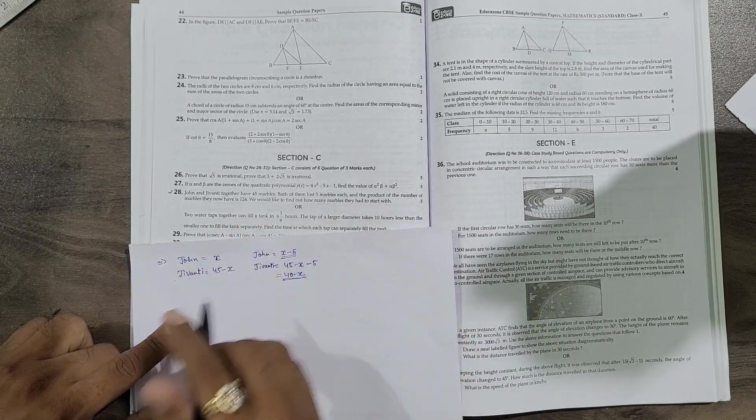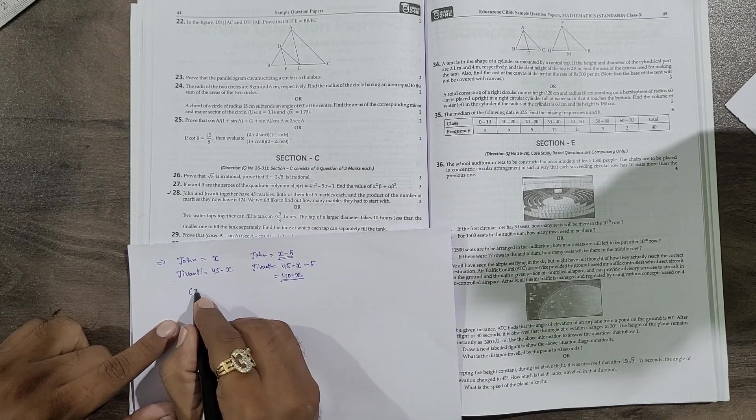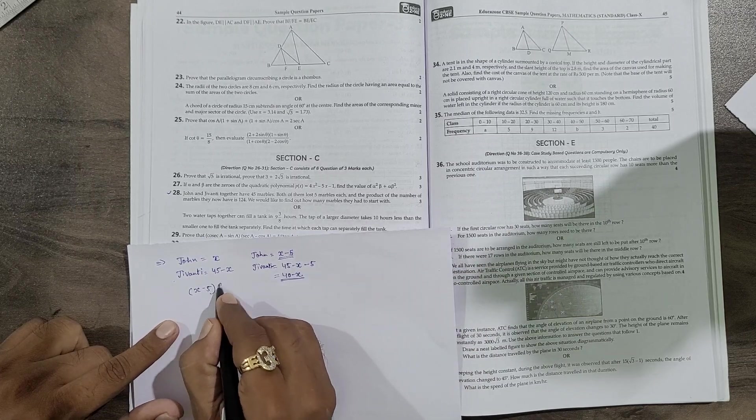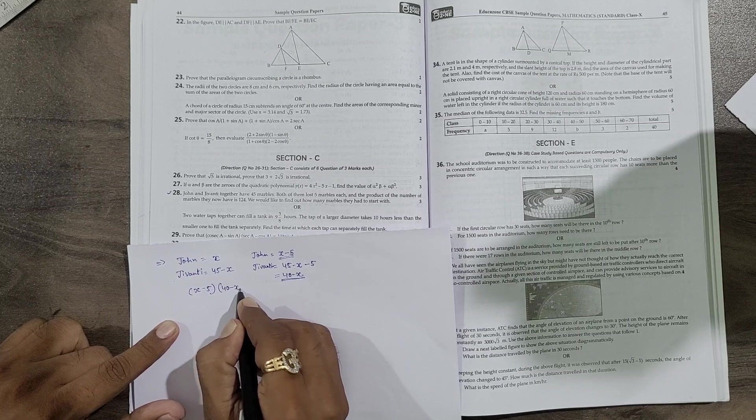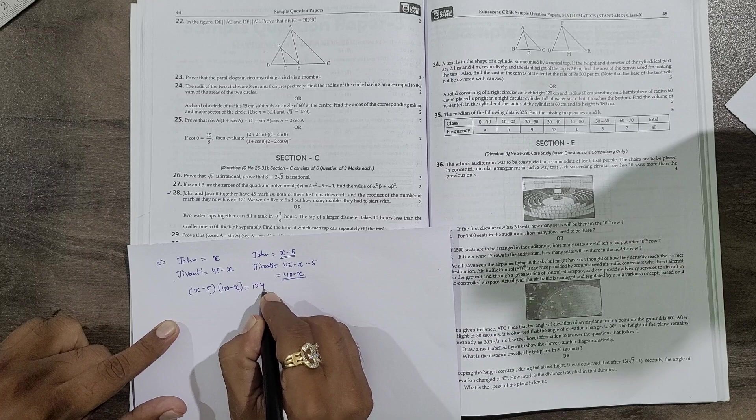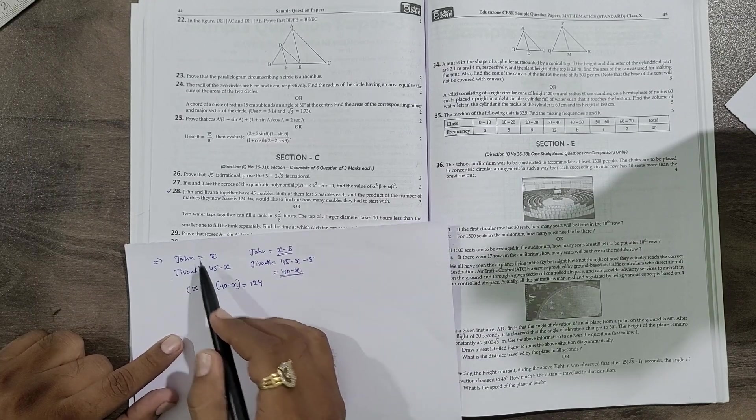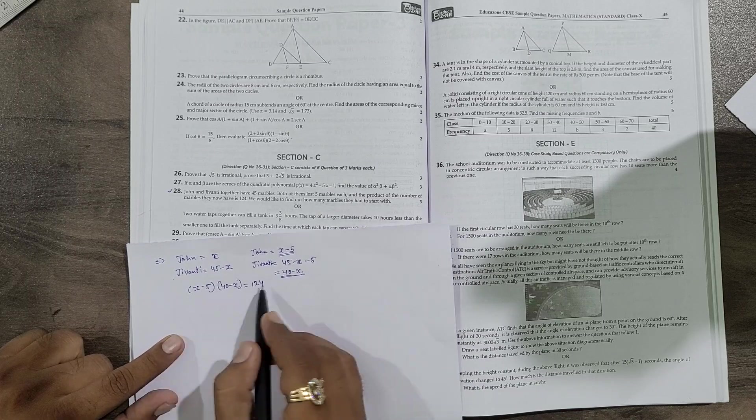Now the product of this number of marbles - the product of x minus 5 and 40 minus x - is 124. Now we have to find out how many marbles are there with them, so just we need to multiply.